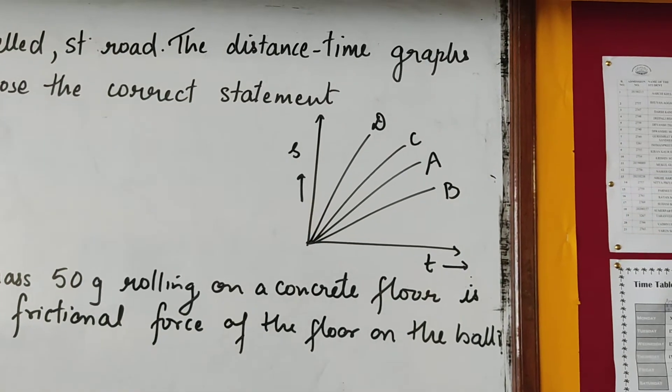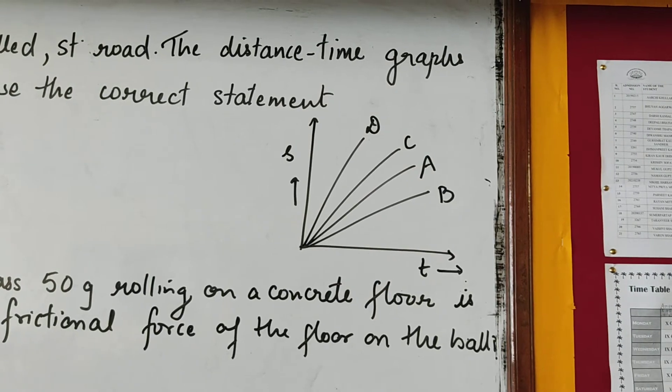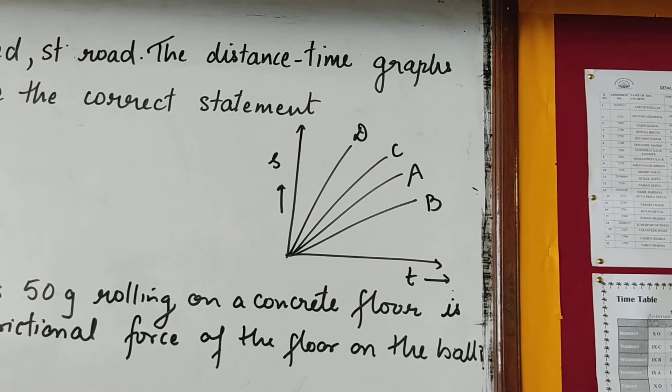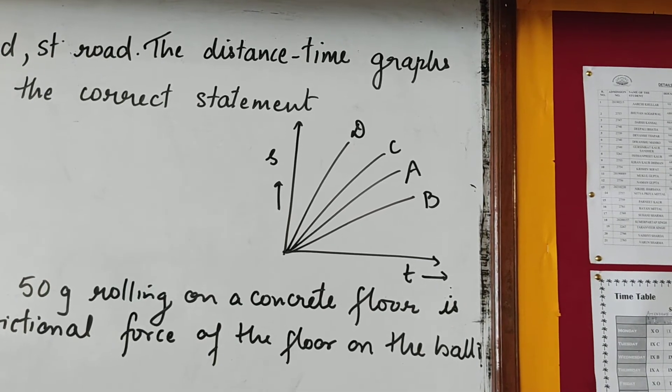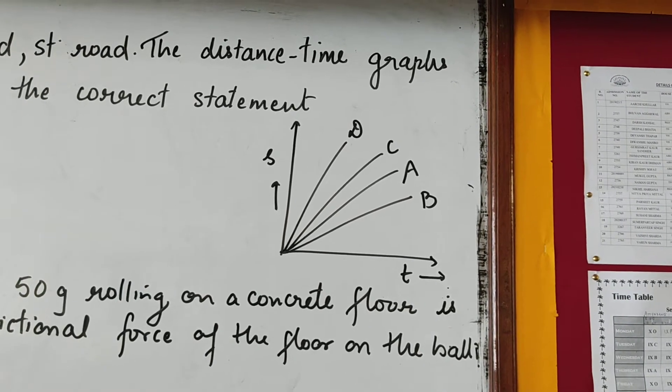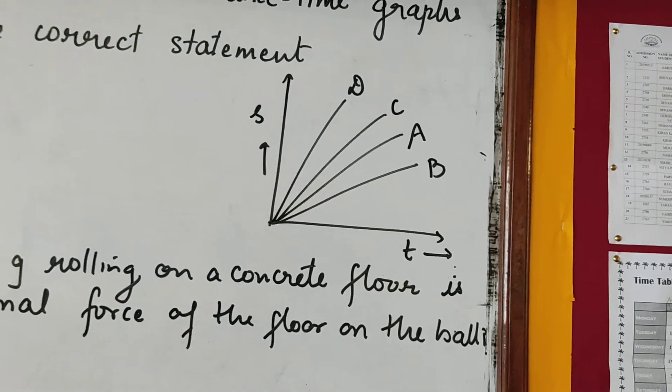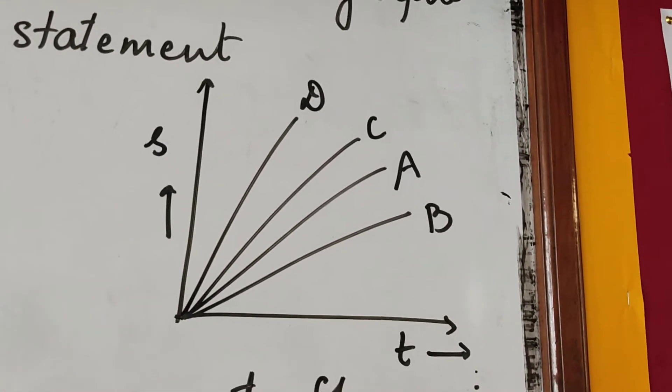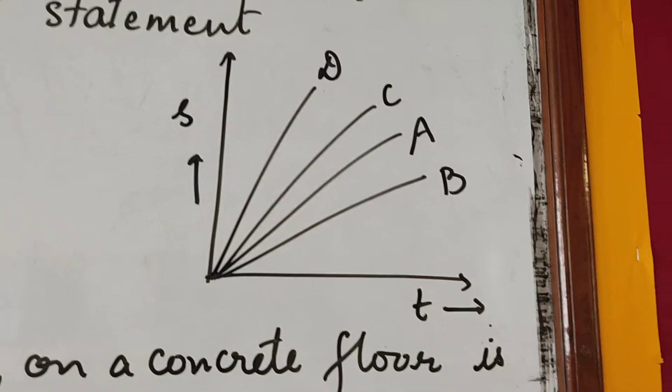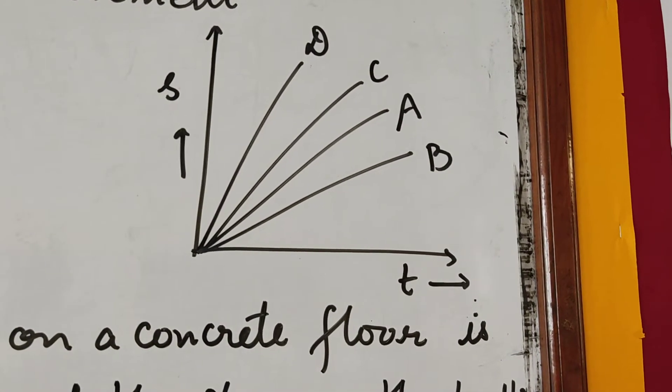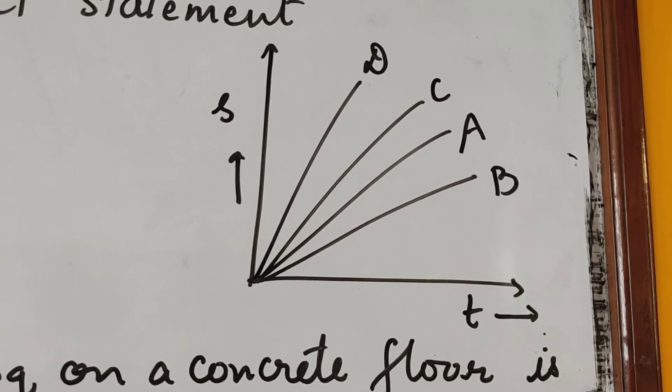Now, we know that slope of ST graph or gradient of ST graph gives us what? It gives us speed of the body. So in this case, slope of the graph will give us speed of the car. Now, as we see here, which car is having maximum slope, it means if we consider the same time interval, which is covering maximum distance?